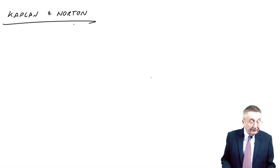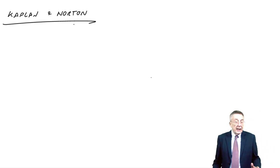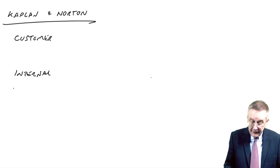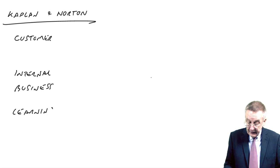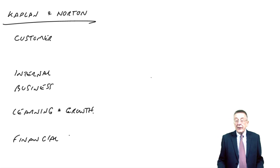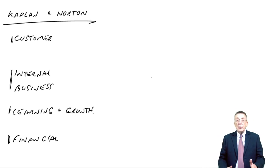If you're on the second page of the chapter, you'll see what you might call a table. They said there were four broad areas — what they called perspectives — that we need to focus on: the customer's perspective, the internal business perspective, the learning and growth perspective, and the financial perspective. You should learn those four perspectives.